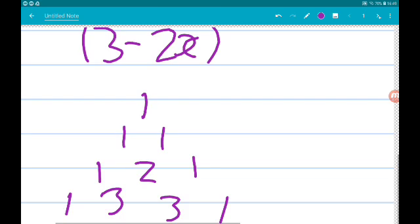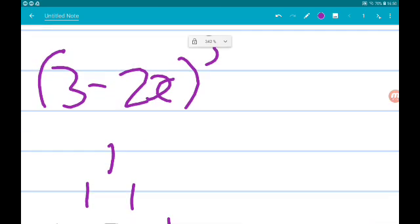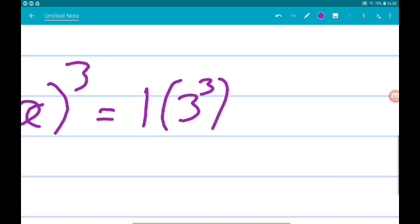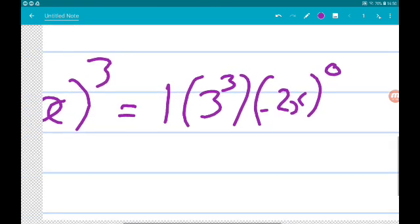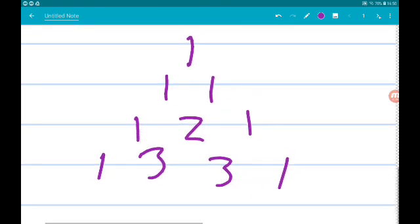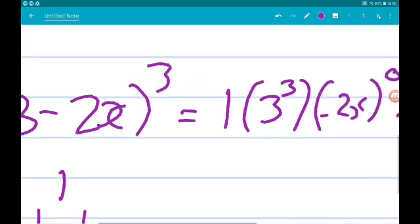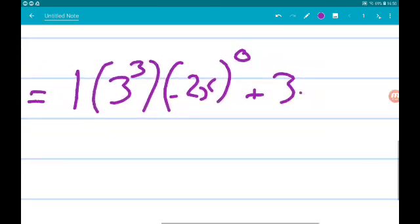We just go through, so we get 1 lot of 3 to the power of 3 times minus 2x to the power 0. And the next term is going to be 3.